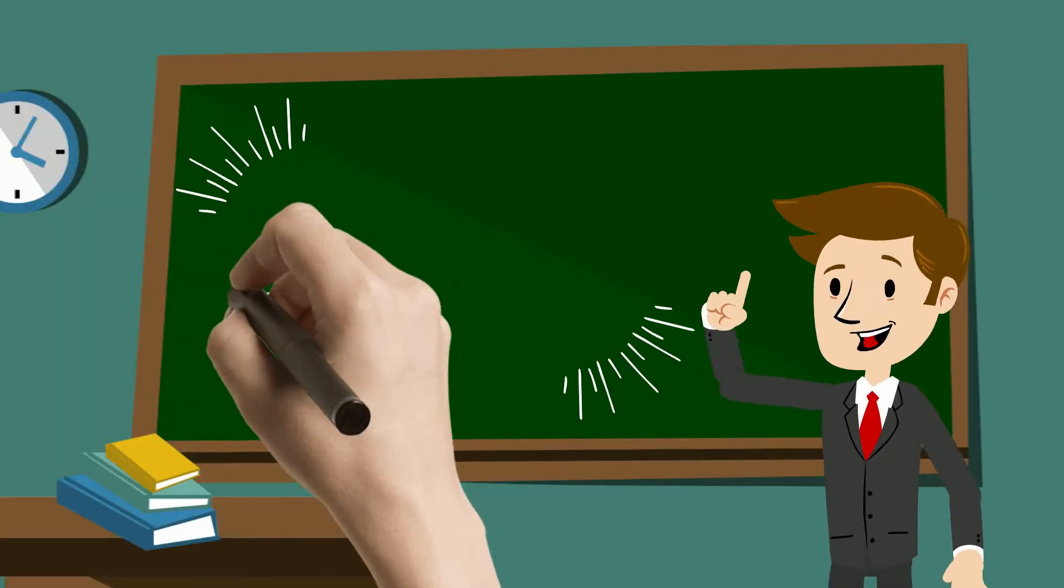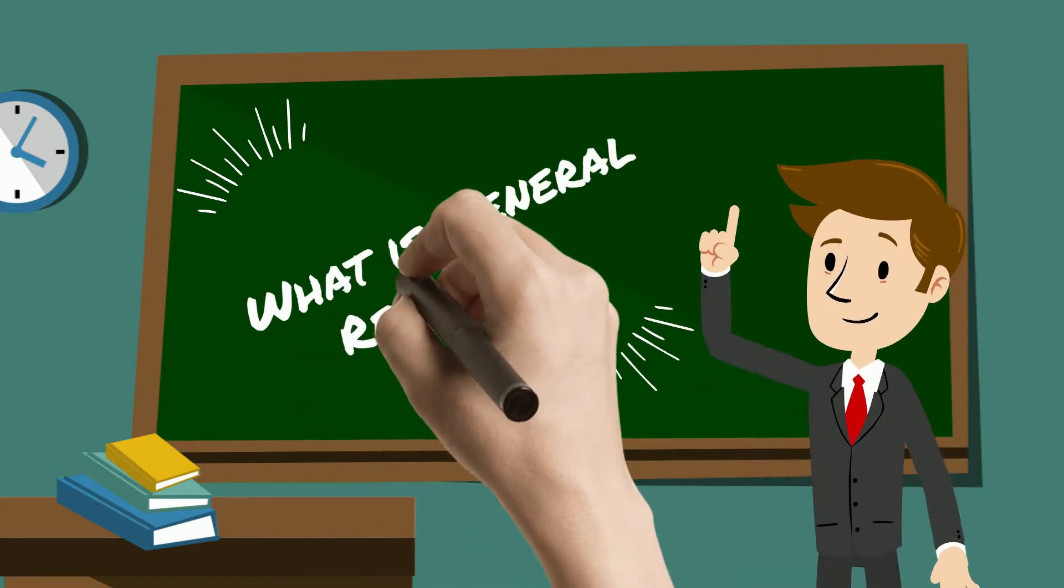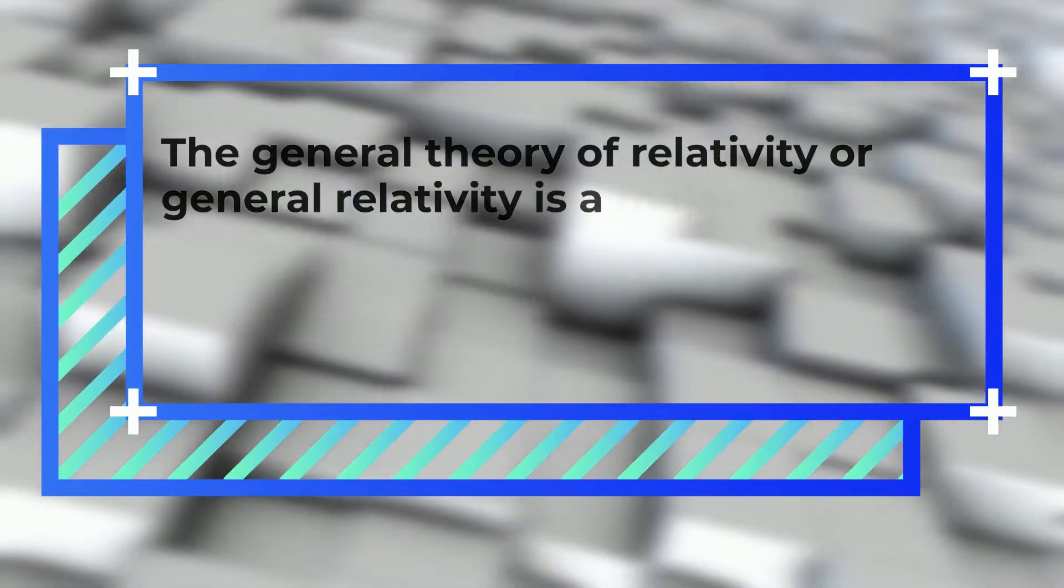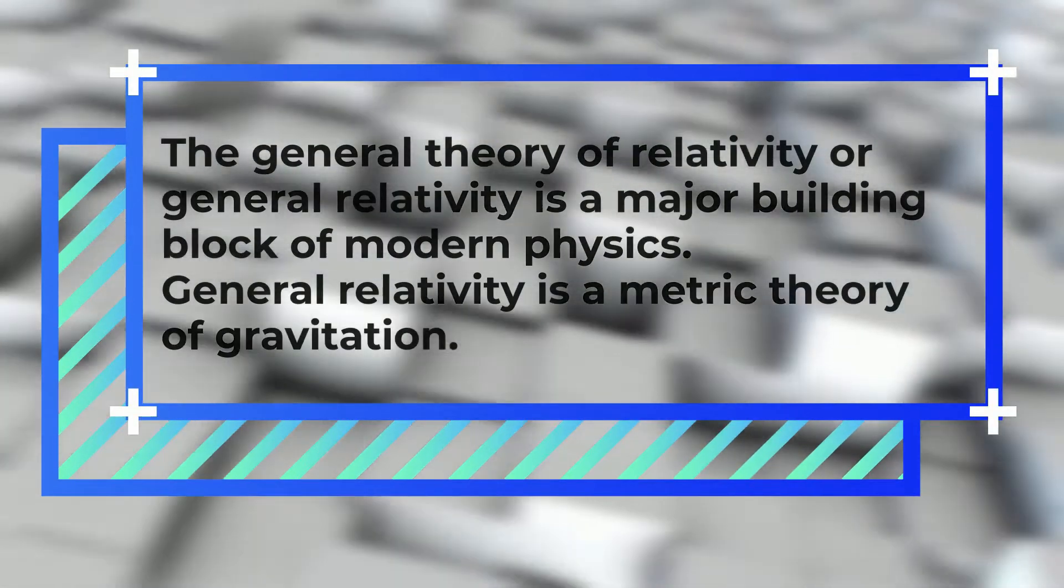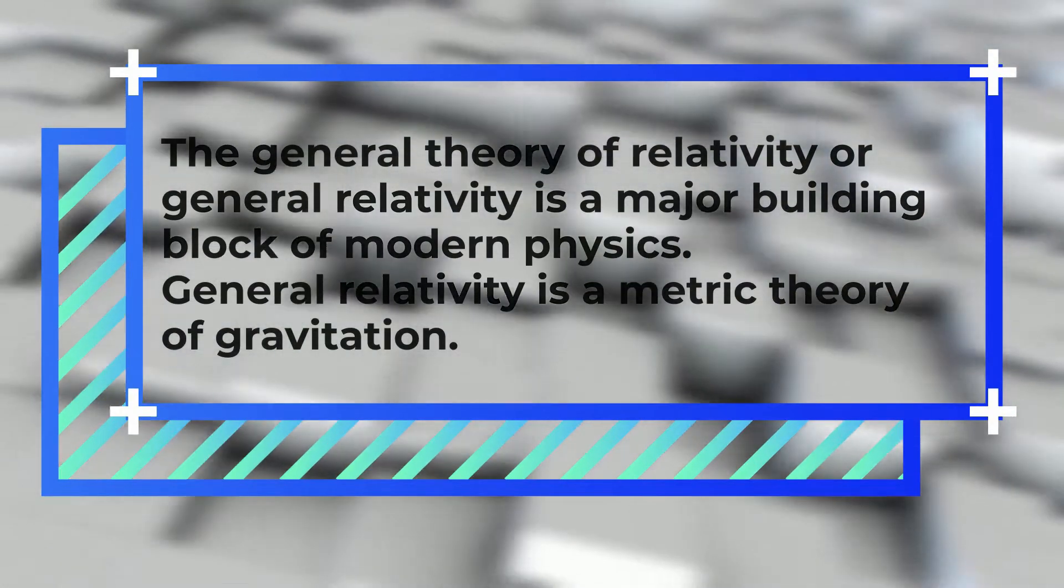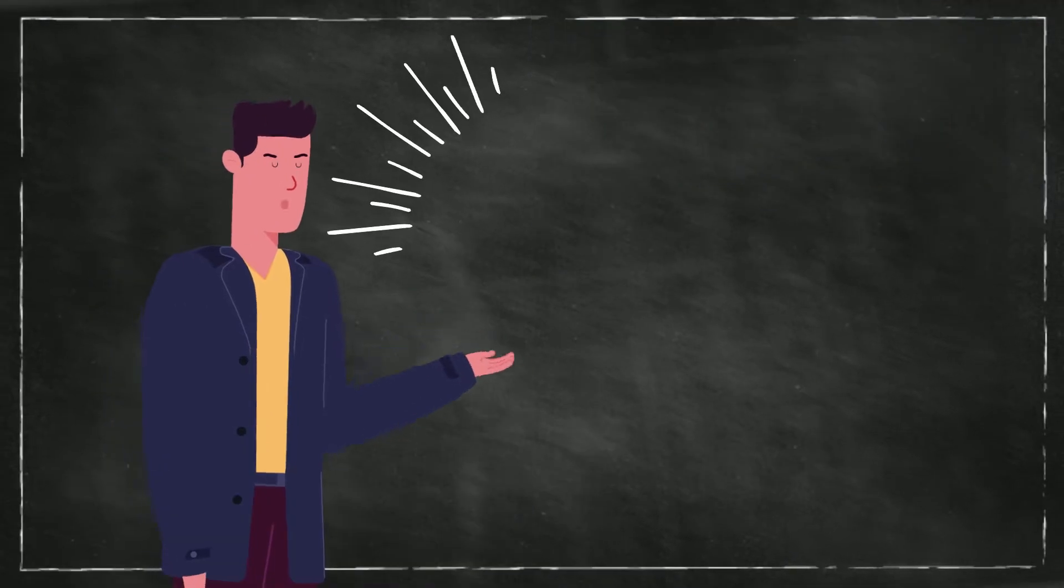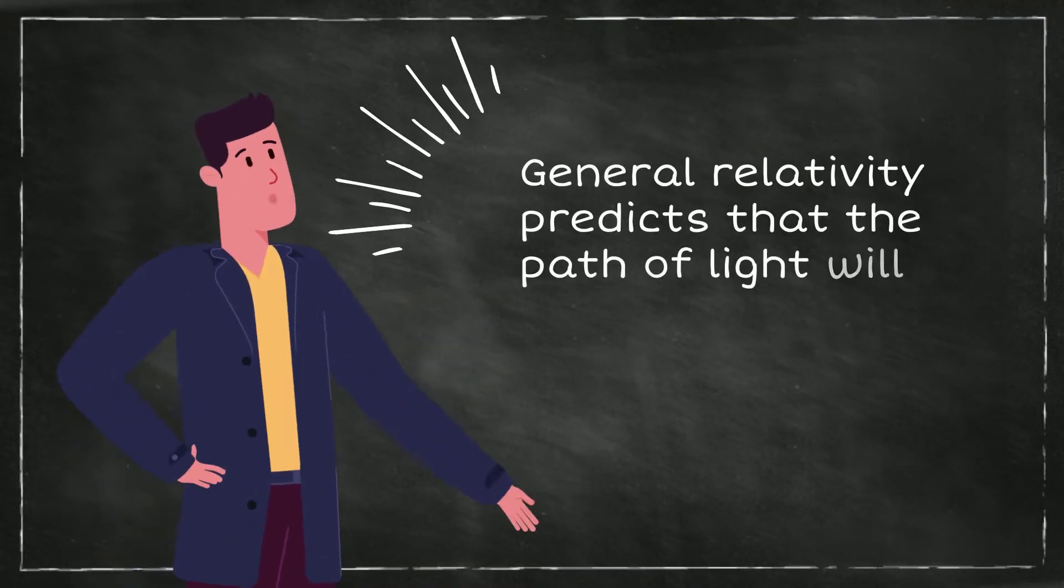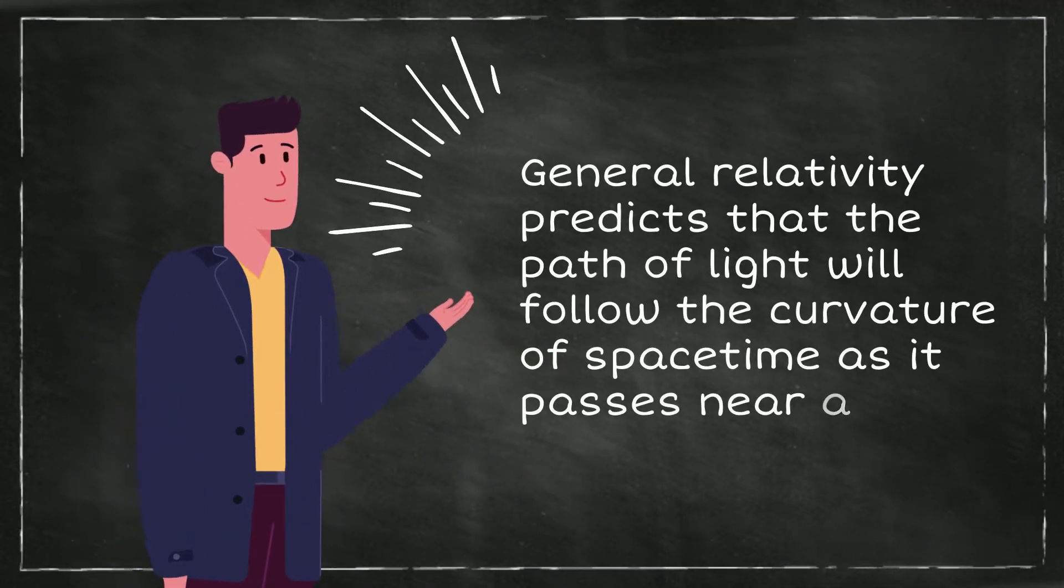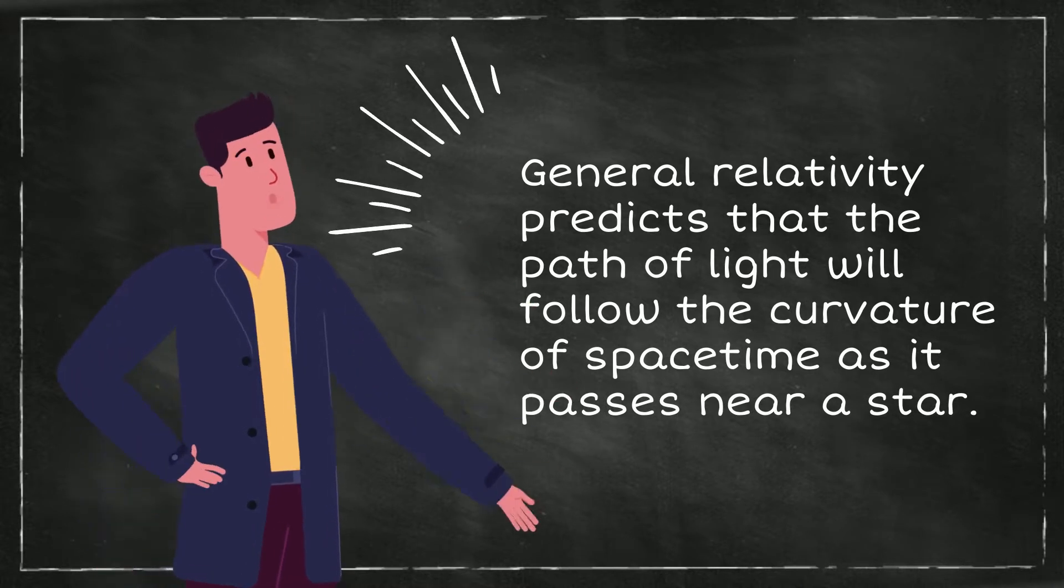So the first question is what is General Relativity? The General Theory of Relativity or General Relativity is a major building block of modern physics. General Relativity is a metric theory of gravitation. General Relativity predicts that the path of light will follow the curvature of spacetime as it passes near a star.